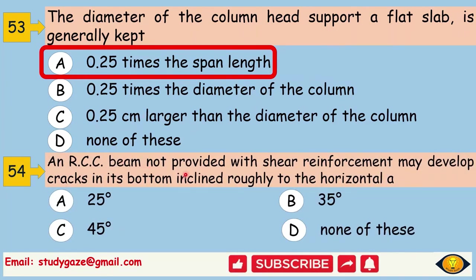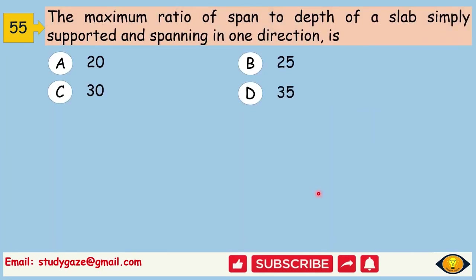An RCC beam, not provided with shear reinforcement, may develop cracks at its bottom inclined roughly to the horizontal, at 45 degree. The maximum ratio of span to depth of a slab simply supported and spanning in one direction is 30.